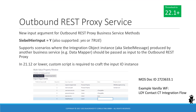The final throwback topic for today is a new input argument for outbound REST proxy business service methods. It goes by the name of Siebel HierInput. When added to an outbound REST proxy method invocation with a value of y, yes, or true, the proxy service will interpret the hierarchical input as an integration object instance, which we often refer to as a Siebel message. We can find a standard use case for this input argument in the new standard workflow processes that are part of the Oracle CrowdTwist integration for Siebel Loyalty, which have been introduced with the 22.1 update.